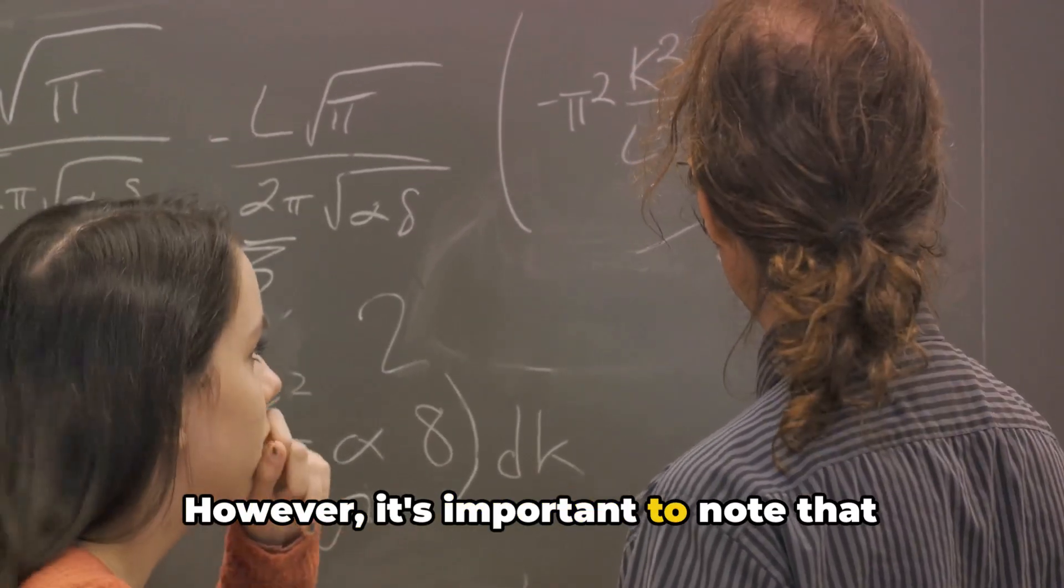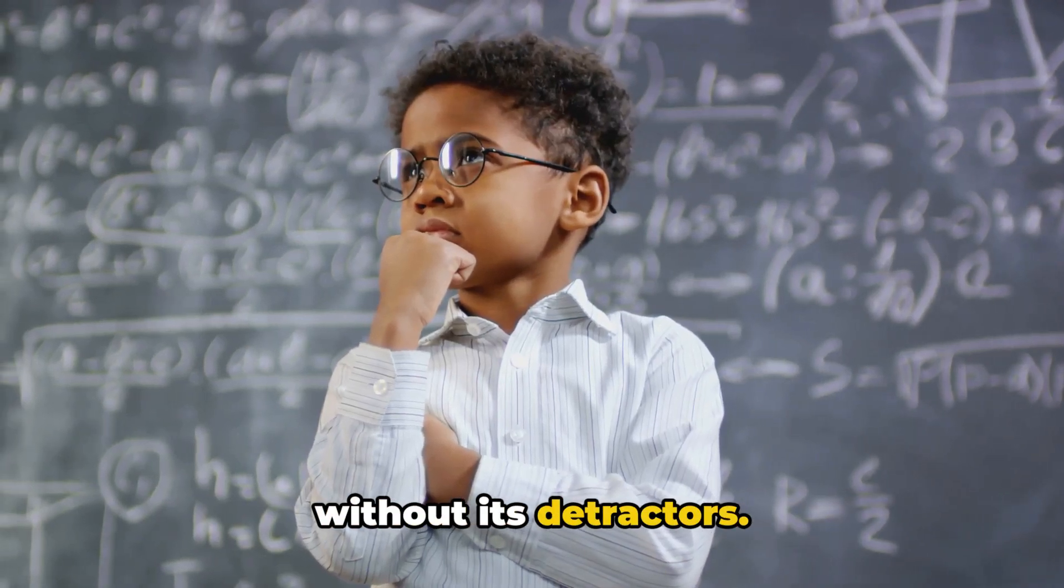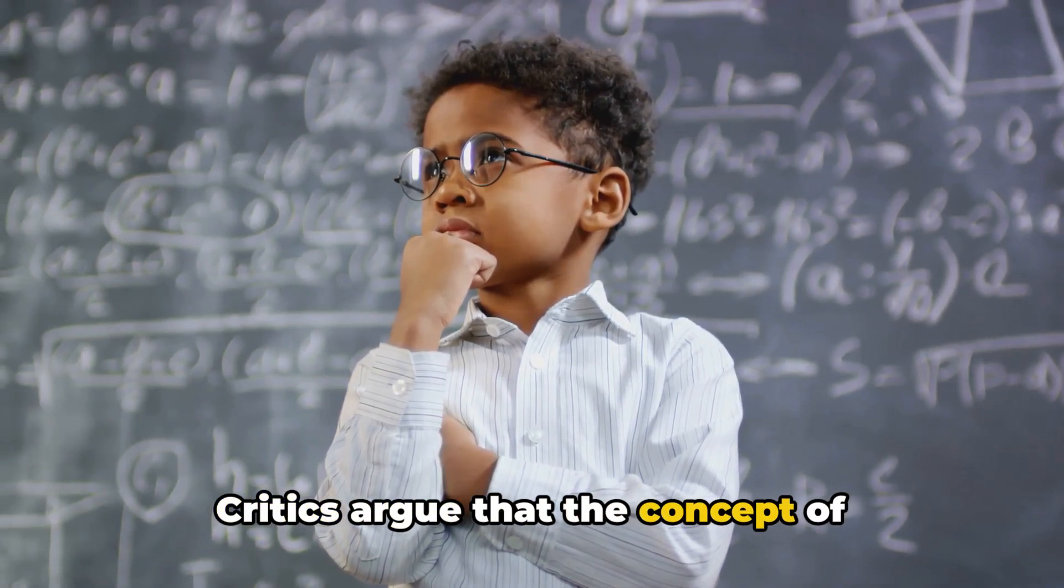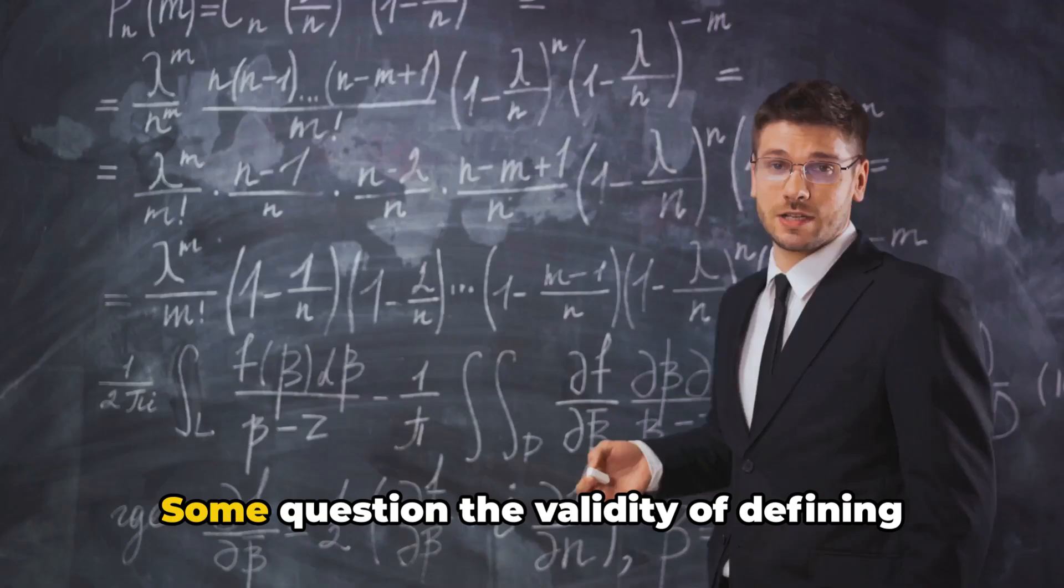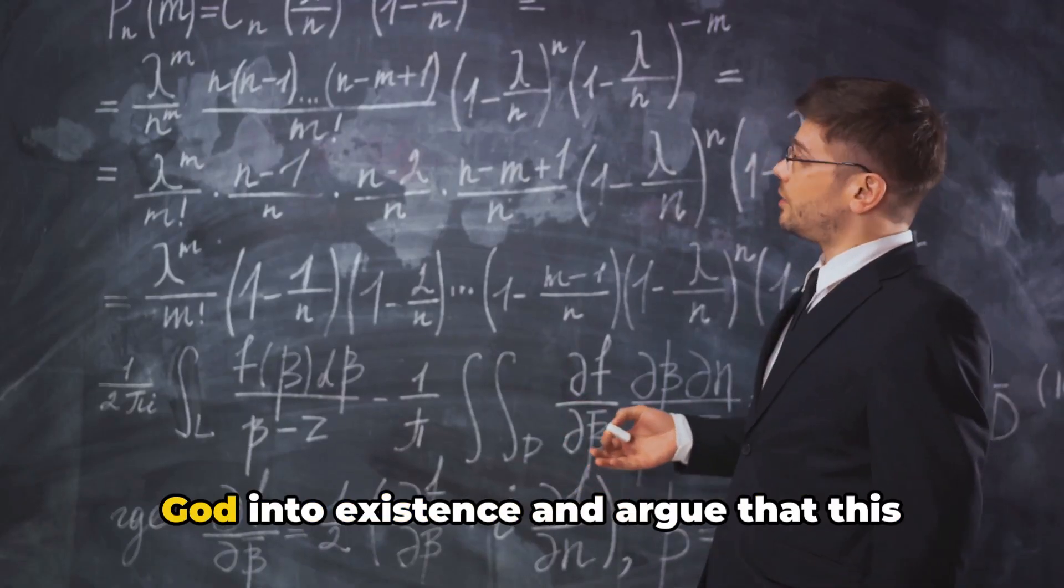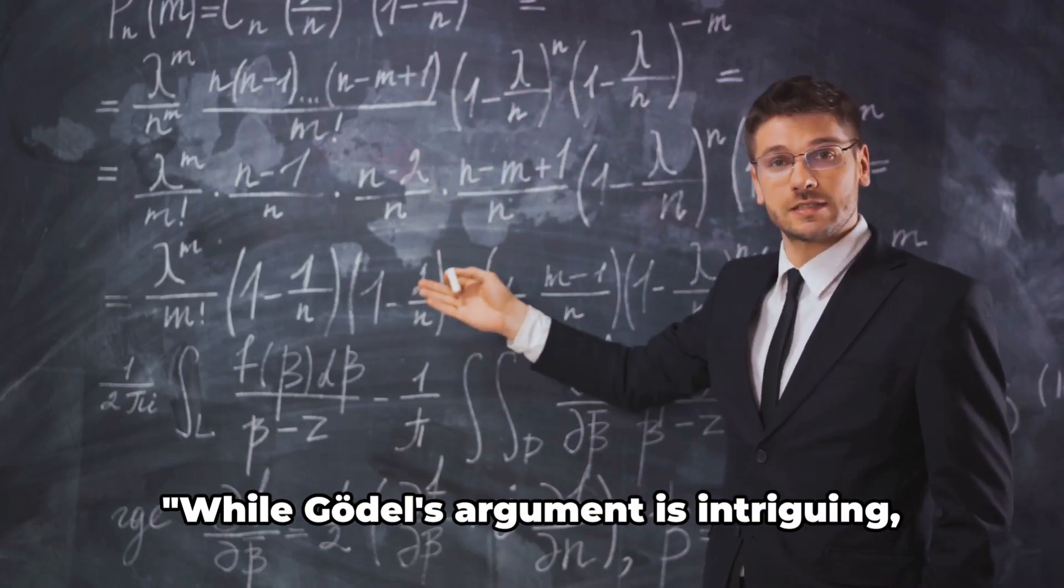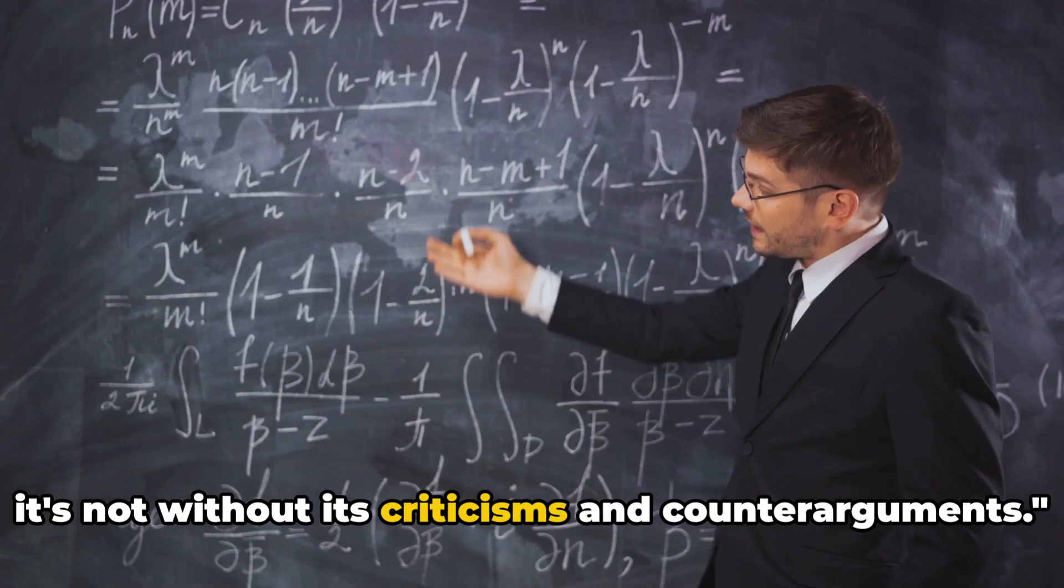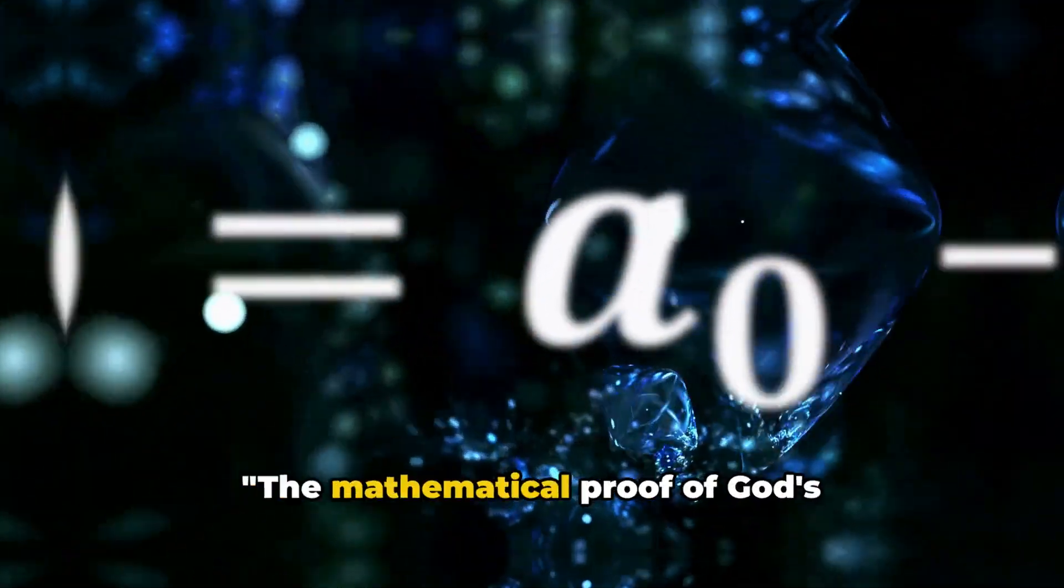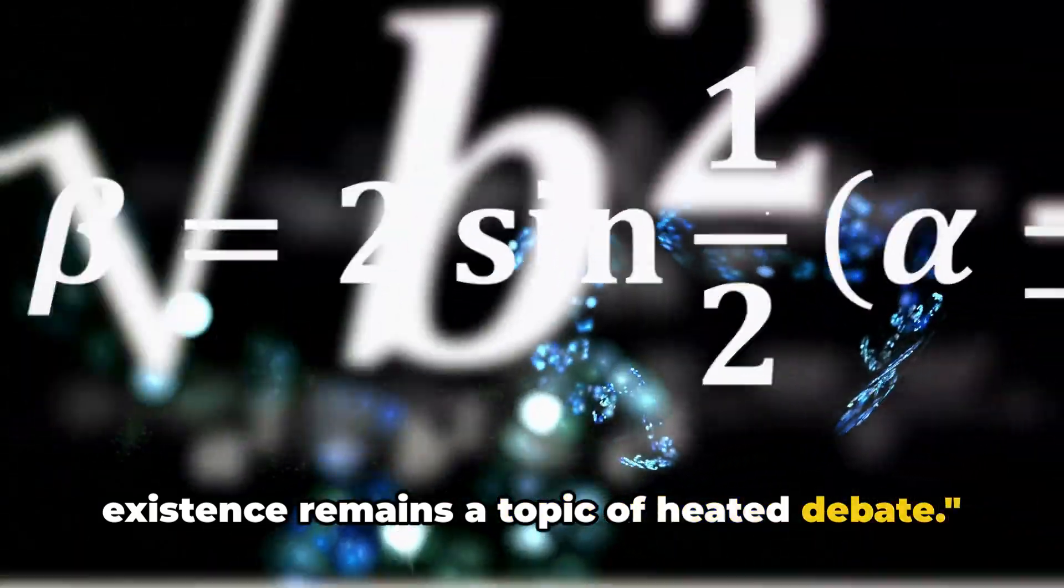However, it's important to note that Gödel's ontological argument is not without its detractors. Critics argue that the concept of positive properties is subjective and may differ from person to person. Some question the validity of defining God into existence and argue that this approach doesn't provide concrete proof. While Gödel's argument is intriguing, it's not without its criticisms and counter-arguments. The mathematical proof of God's existence remains a topic of heated debate.